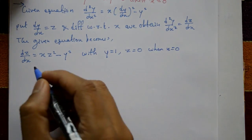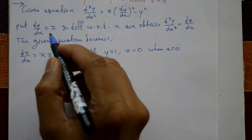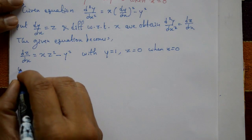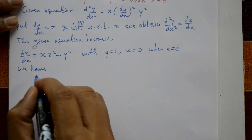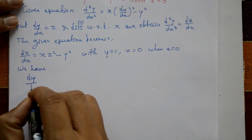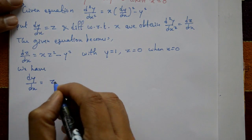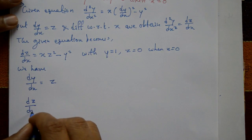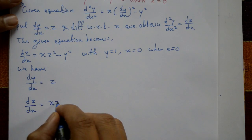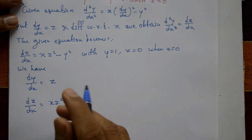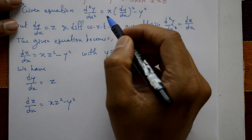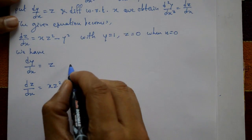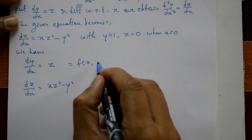We now have two equations: the first is dy/dx = z, and the second is dz/dx = xz² - y². The second order differential equation has been reduced to two simultaneous first order equations.